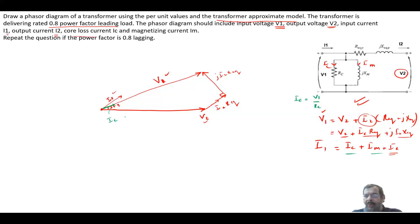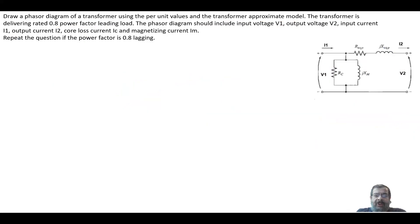Remember, I1 equals IC plus IM plus I2. We already have I2, so I'll move this vector parallel here. This is IC. Then we have IM, which is 90 degrees with this. When you add I2, IC, and IM, you get I1. That is the phasor diagram that incorporates everything.